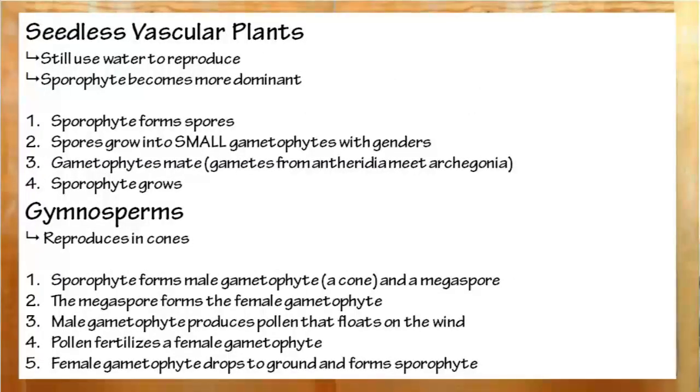In seedless vascular plants, the dominant phase is the sporophyte. This has sporangia towards the lower end, which will release haploid spores after undergoing meiosis. These spores, when they reach fertile ground, will grow into gametophytes, males having antheridia again, and females again having archegonia. The male sex cells will then fertilize the female sex cells after traveling through water, and a sporophyte will be produced.